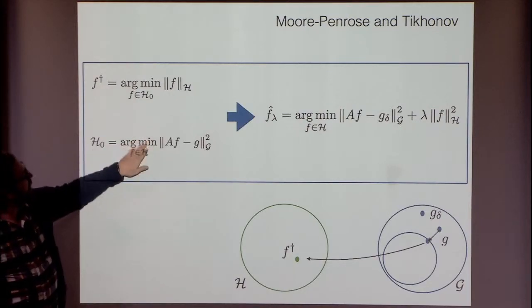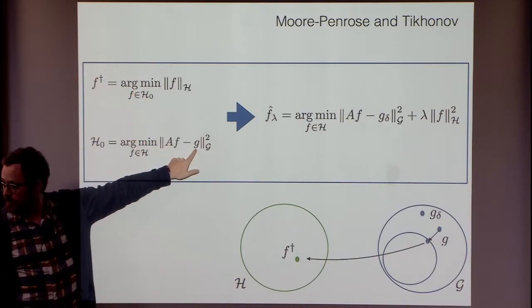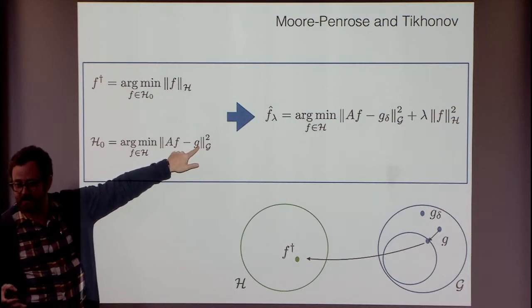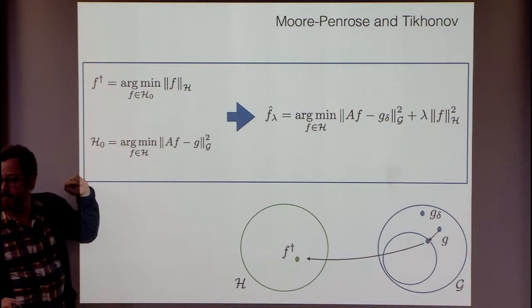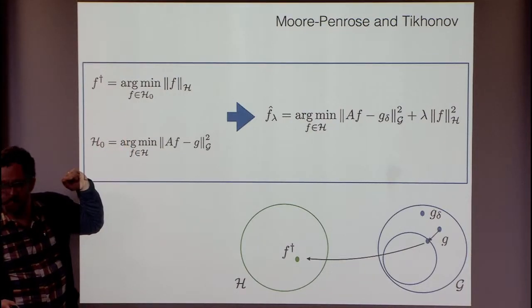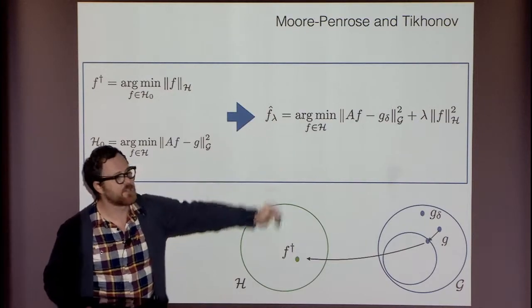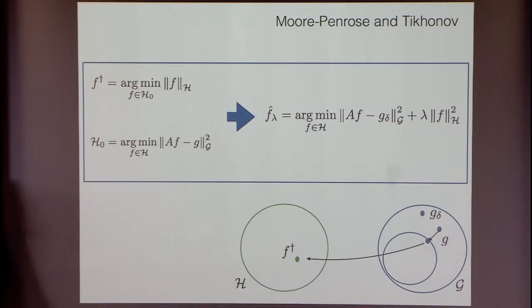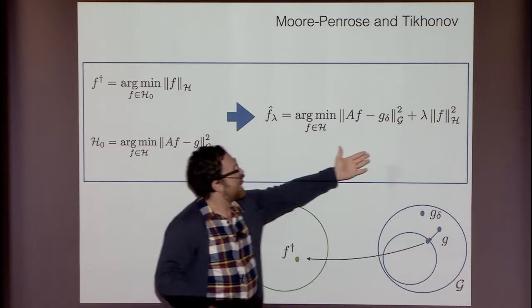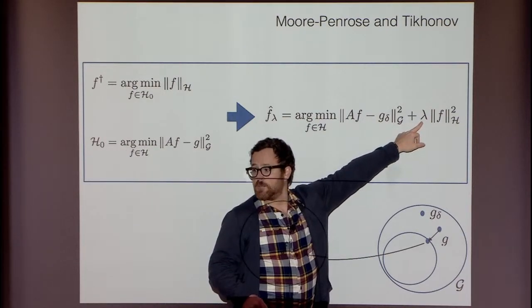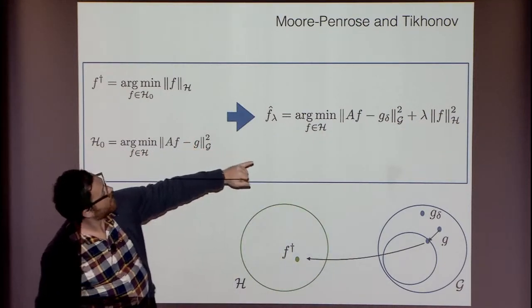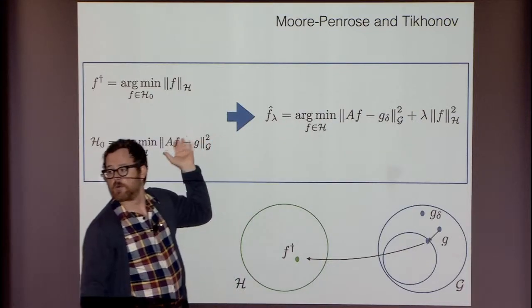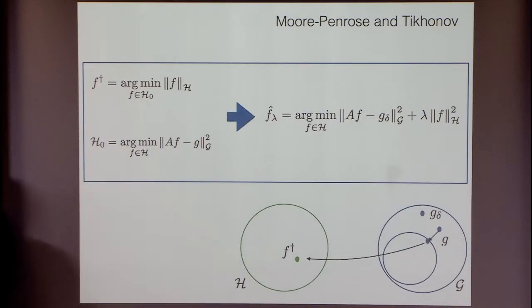But if you plug in the actual noisy data, the generalized solution might not behave stably with respect to the noise. So the classical approach is Tikhonov regularization: replace the original problem with a penalized minimization, which is a family of possible solutions indexed over lambda. You choose lambda depending on the noise such that the problem gives you a reasonable solution.